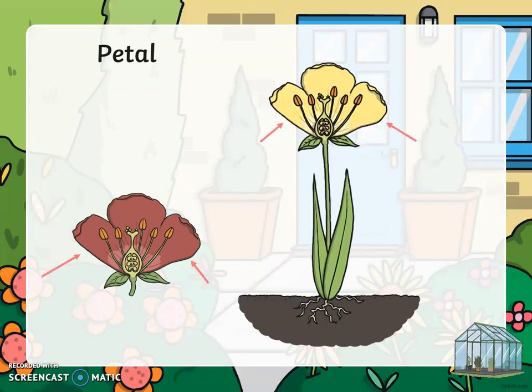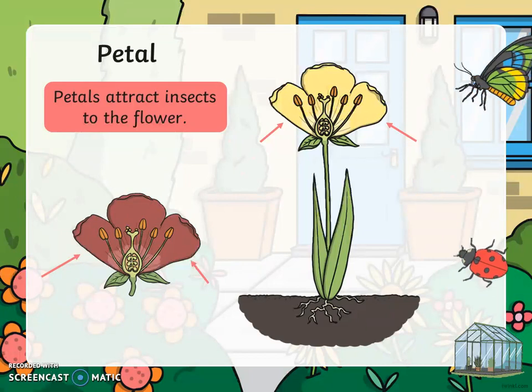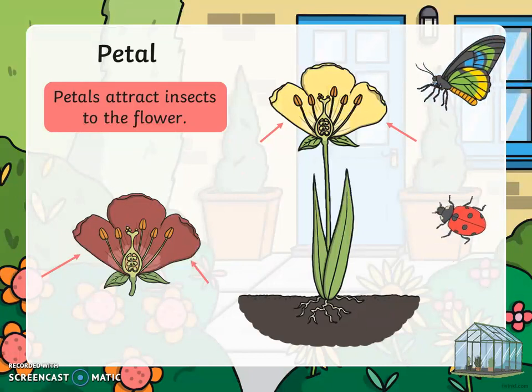Number two, the petal. Petals attract insects to the flower. This helps flowers to reproduce.